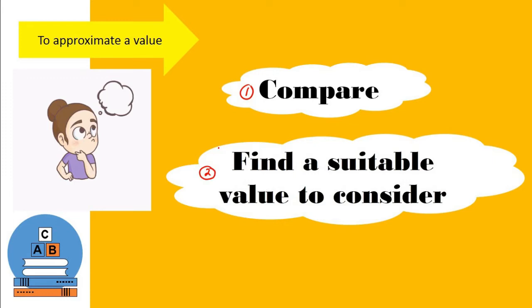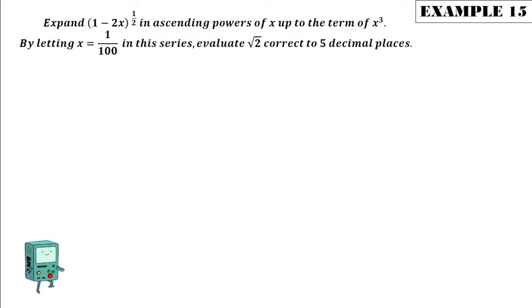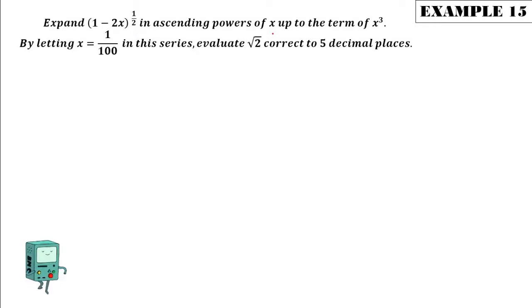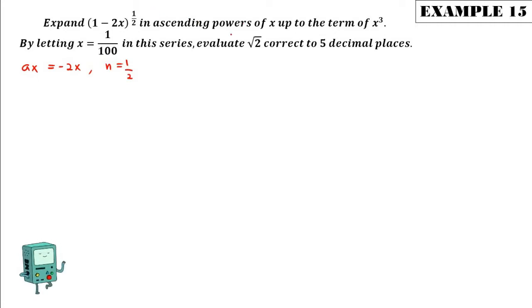If there's a mention of what value of x to use, look at our first example. We have to expand (1 - 2x) to the power of one half in ascending powers of x up to the term x cubed. By letting x equal to 1/100 in this series, evaluate the result correct to five decimal places. Our 'ax' term here is negative 2x, and n is one half.